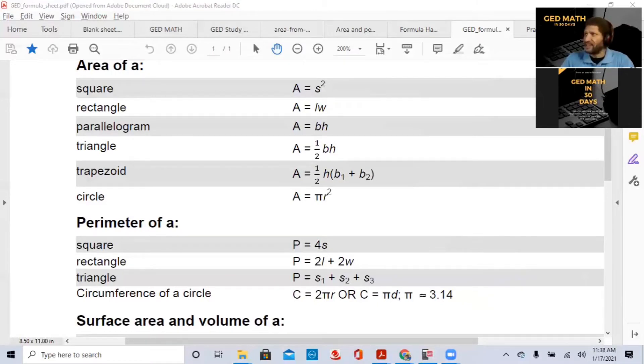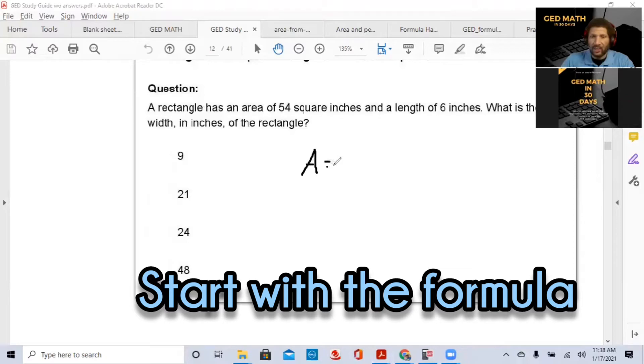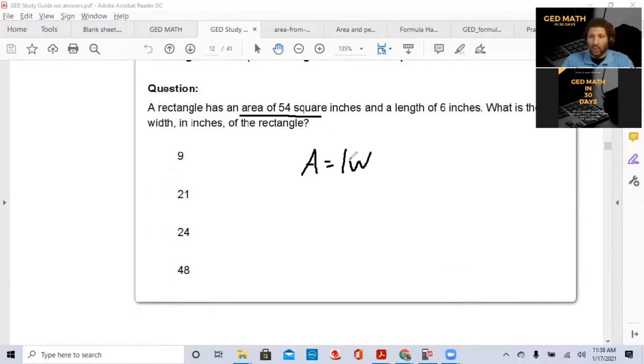You can almost be guaranteed that you're going to have the following question. A rectangle has an area of 54 square inches and a length of 6 inches. They give you the area and you have to determine the length or width. Always start with your formula. So we got area equals length times width. Instead of A, we're going to put 54. The length is 6, and W is still unknown. This is a simple one-step algebraic equation. Divide both sides by 6. Six is canceled. You get W equals 9. A nice, easy 30-second to 45-second problem.